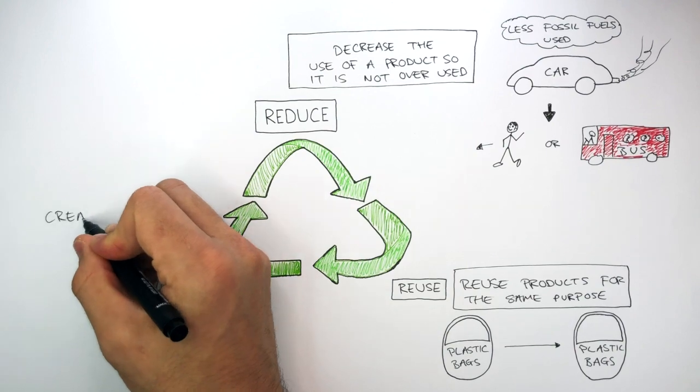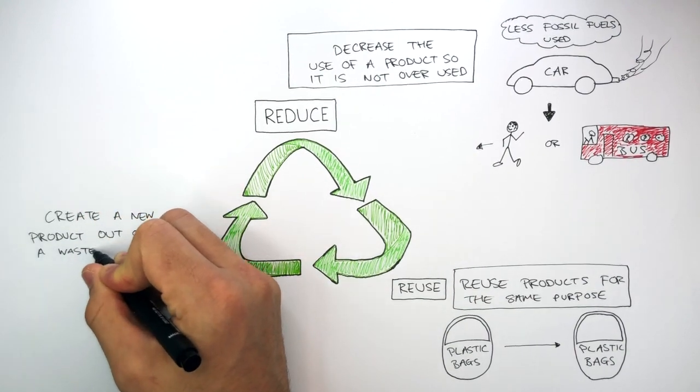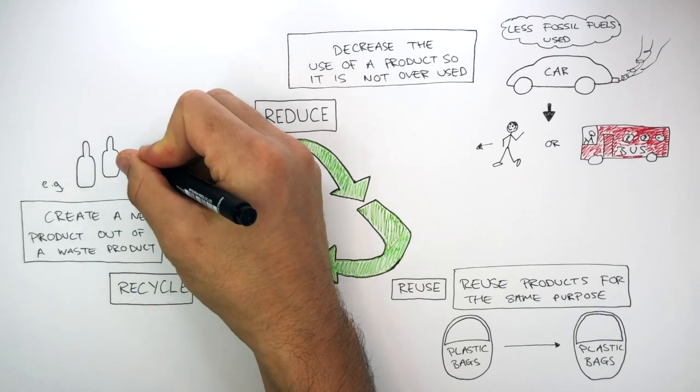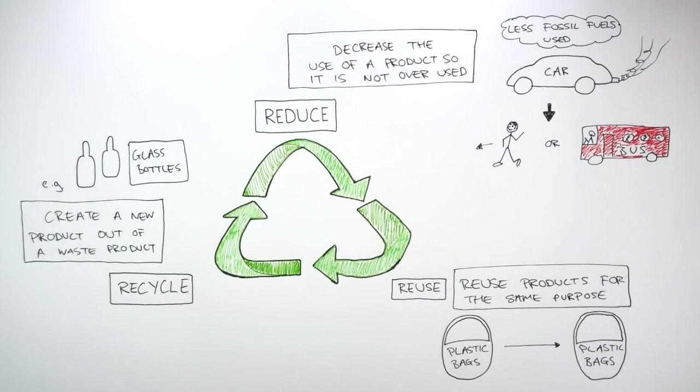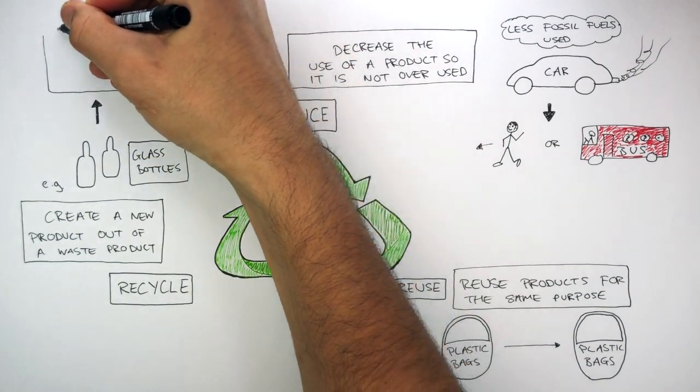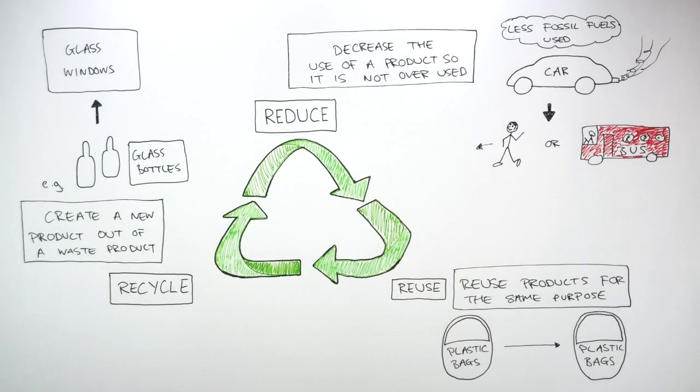And to recycle is to create a new product out of a waste product. For example, here we have glass bottles and let's say these glass bottles are now waste products. Rather than them ending up in a landfill site, we can create a new product, in this case glass windows. And now we have a useful product which we can use.